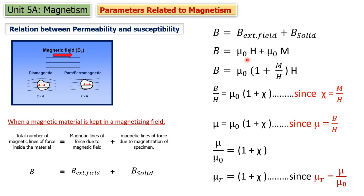Therefore we can write: B = μ₀H + μ₀M. Taking μ₀ and H common, this becomes B = μ₀(H + M). Rearranging: B = μ₀H(1 + M/H). Now M/H is nothing but susceptibility chi — since M is directly proportional to H, M/H is constant and equals chi. So this becomes B = μ₀H(1 + χ).